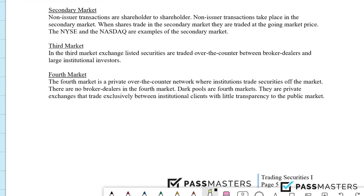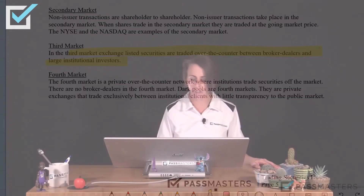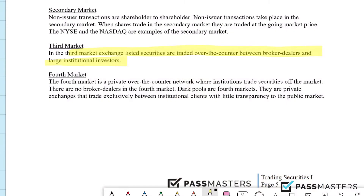In the third market, exchange-listed securities are traded over-the-counter between broker-dealers and large institutional investors. In the fourth market, it is a private over-the-counter network where institutions trade securities off the market. There are no broker-dealers in the fourth market.